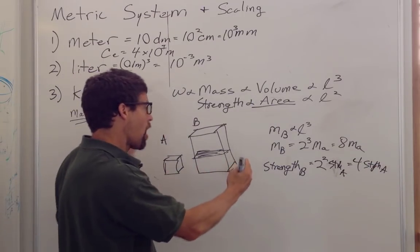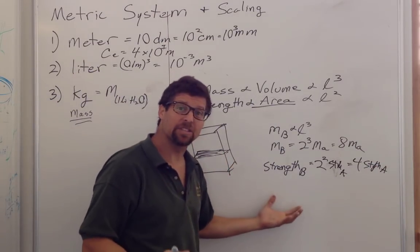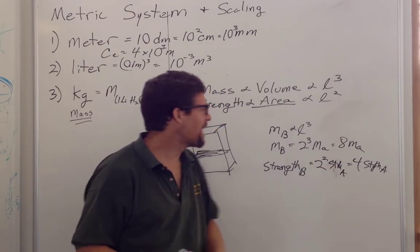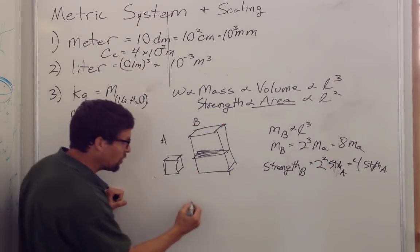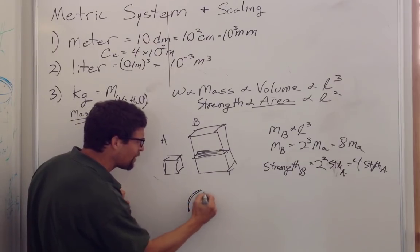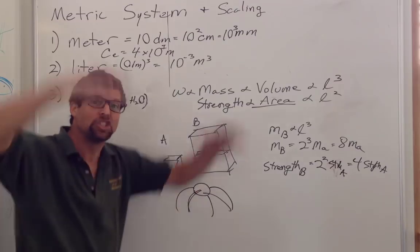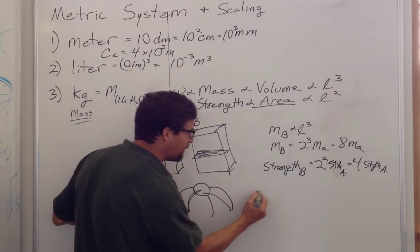So as things get bigger, their mass grows faster than their strength to support that mass. And that's why, for instance, when you look at insects, they stand on little pinnacles. You have a spider standing on little tiny pinnacles, and they can jump many times their height.